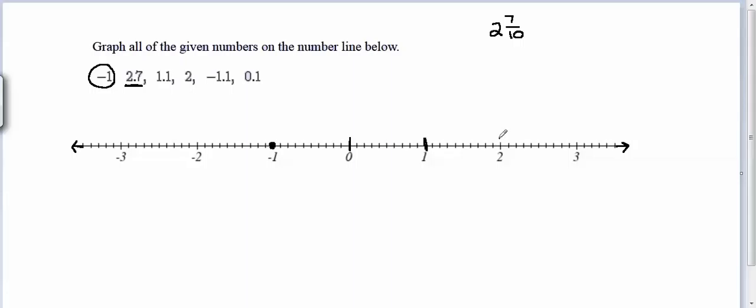And we'll do the same thing from 1 to 2, and the same thing from 2 to 3. So we've created 10 spaces in between each whole number by drawing 9 little lines.